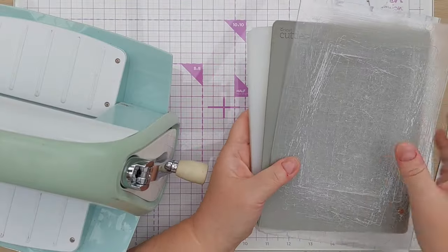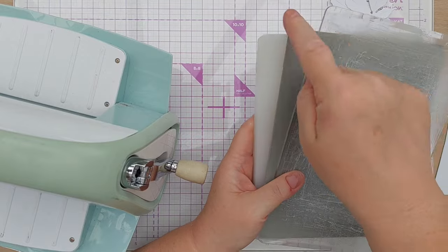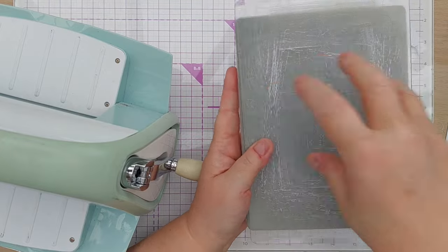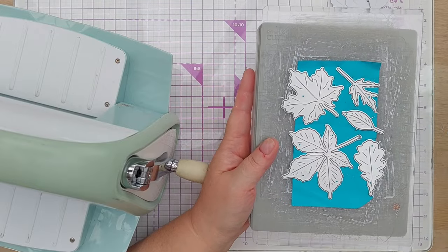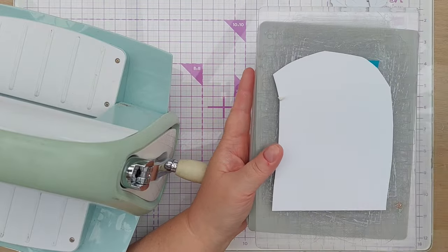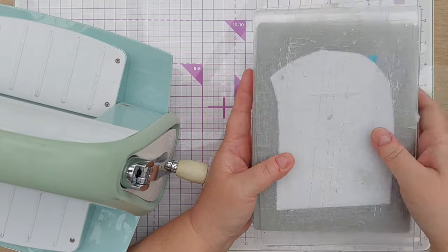So first things first, I cut them as normal. I've got my thick plate, my rubber mat, my cutting plate, then the leaves cutting side up and some smooth white cardstock on top, and then another cutting plate.